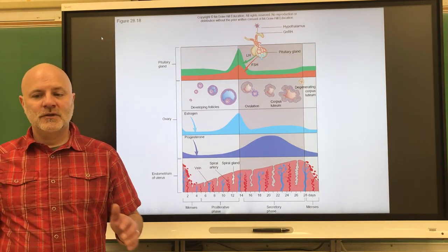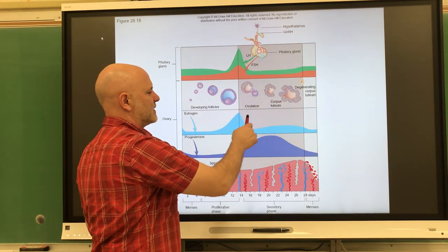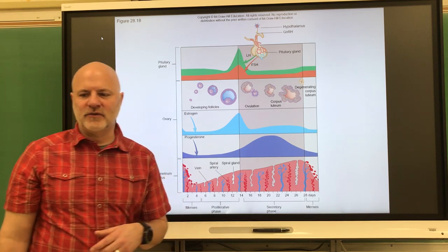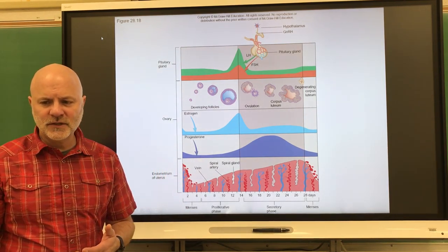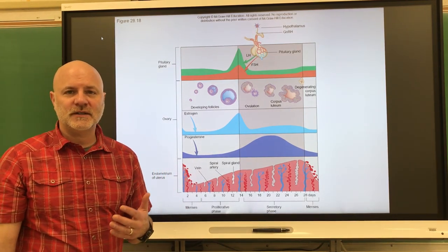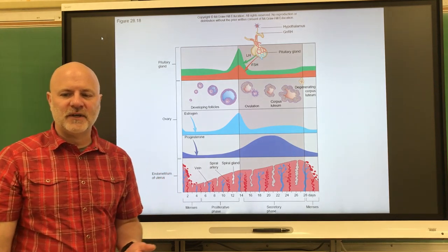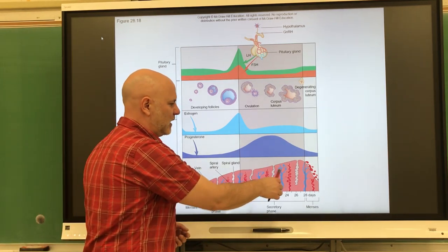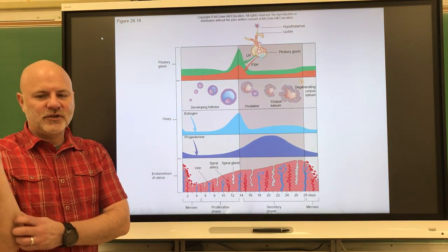Here now we have a corpus luteum. We start secreting high levels of progesterone, and progesterone secretion causes the blood vessel formation within the endometrium. So the endometrium gets thicker there.